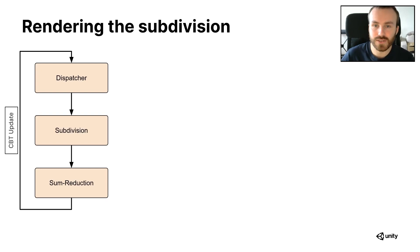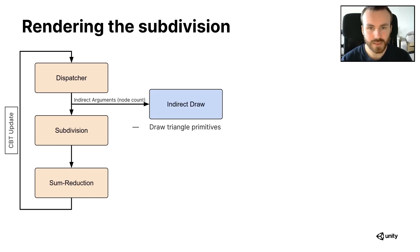Now that we know how to update our subdivision, we need to also render it to the screen. We want to render all the active triangles in the subdivision, which correspond to the leaf nodes of our binary tree. How do we do this? Well, it's pretty simple.